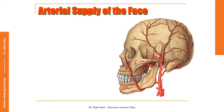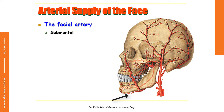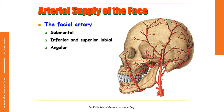Regarding the arterial supply of the face, the main artery that supplies the face is the facial artery, which is one of the branches that come out of the anterior aspect of the external carotid artery. The facial artery is characterized by its spiral or tortuous course because it crosses the mandible and lies obliquely on the face until it reaches the medial angle of the eye. Along its course it gives the submental artery, the inferior and superior labial branches, and the angular artery, which passes obliquely until it reaches the medial angle of the eye.